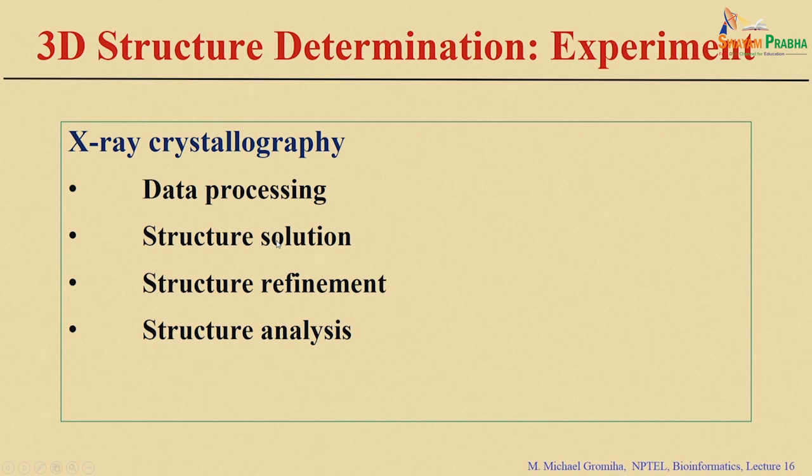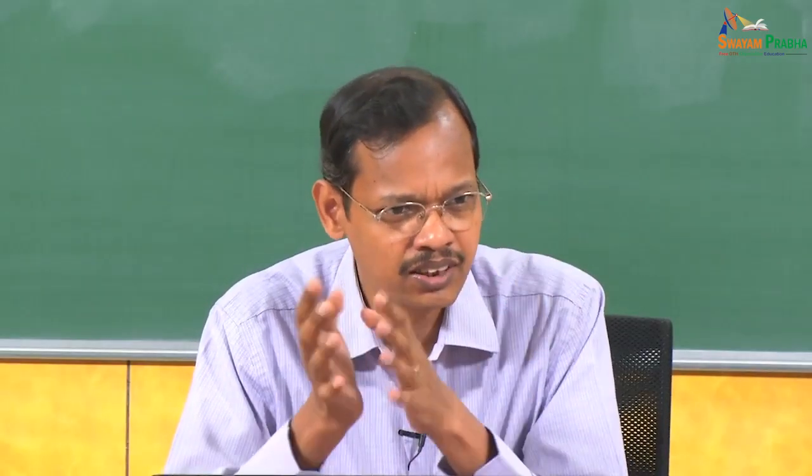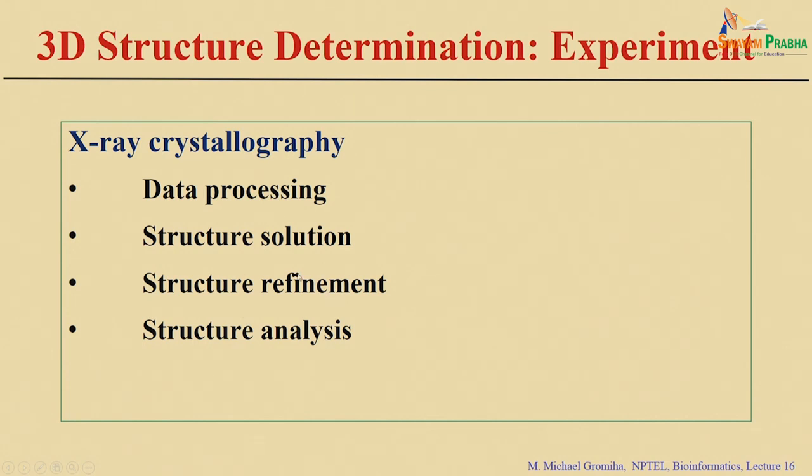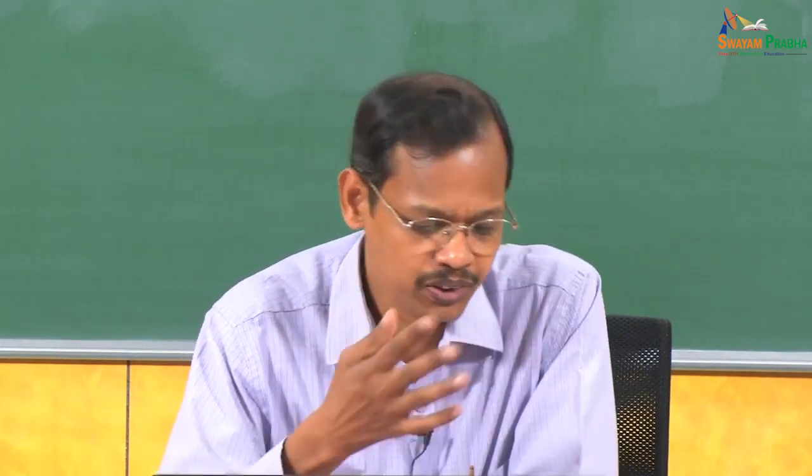Once the data is processed, we get the structures. Then we need to refine the structures — depending on the quality, we need to match the known electron density map with known structures. After refinement, we get the refined structures, which are useful for analysis to understand the behavior of protein structures, the relationship between structure and function, active site residues, and residues involved in stability and folding.